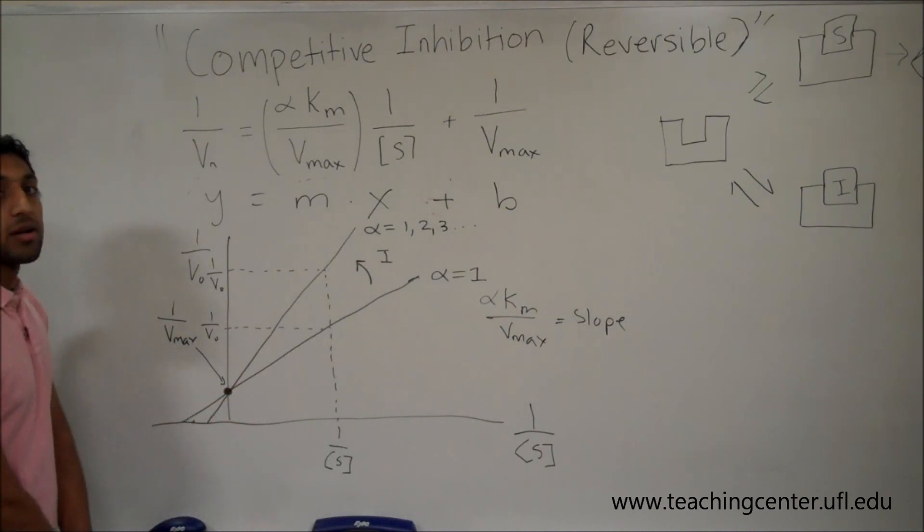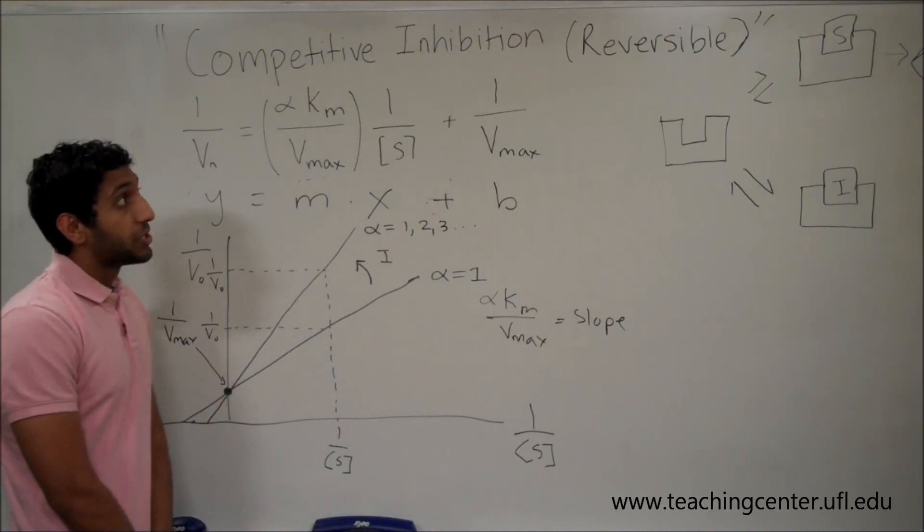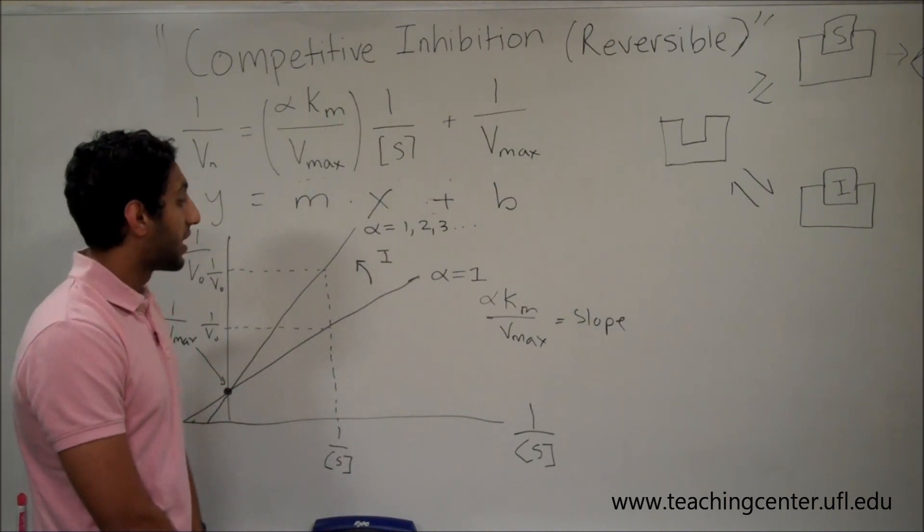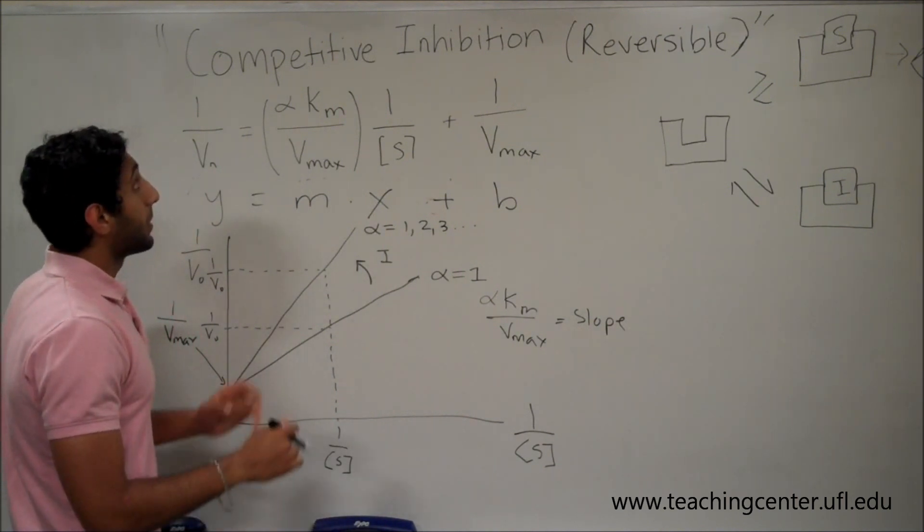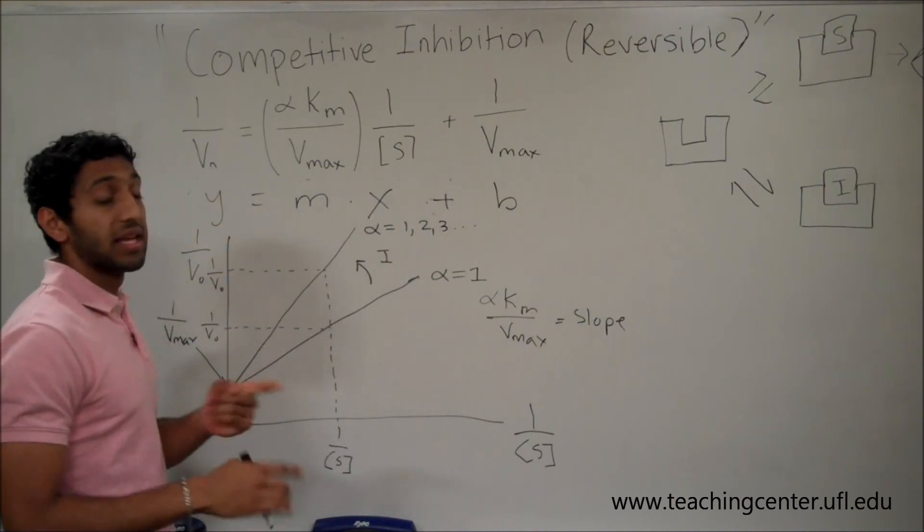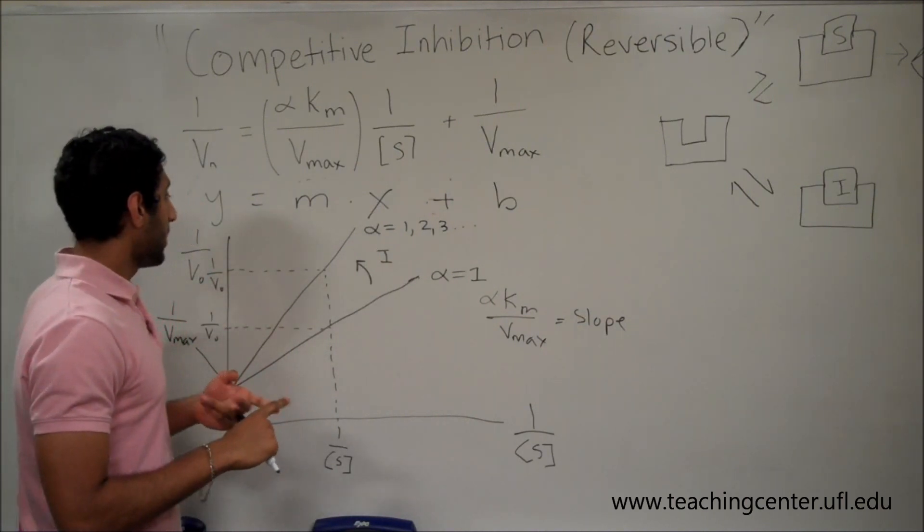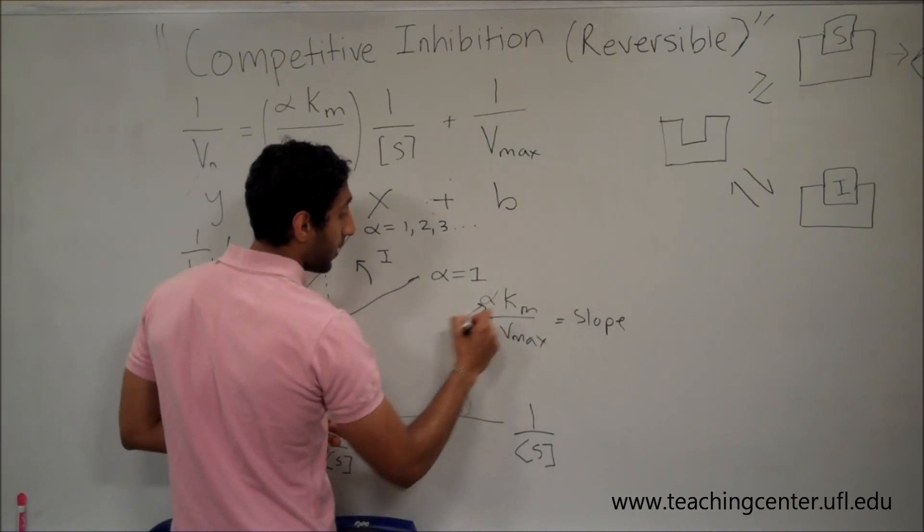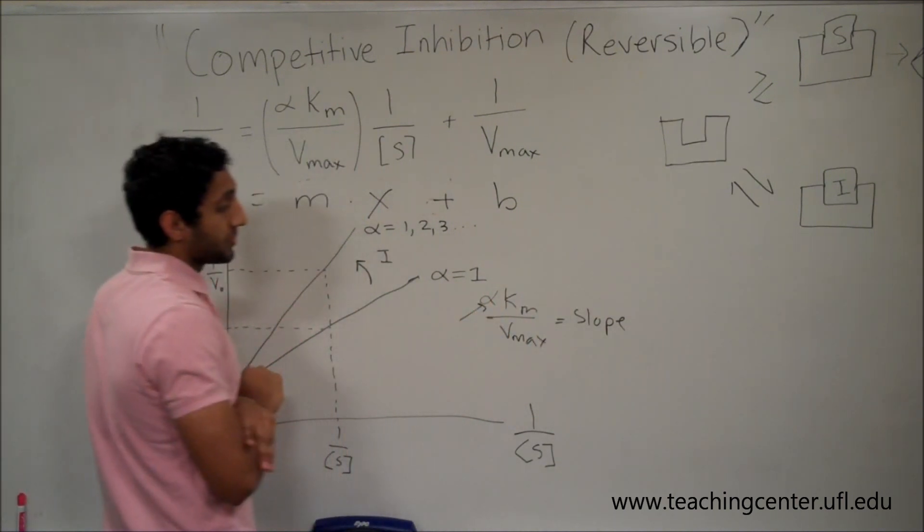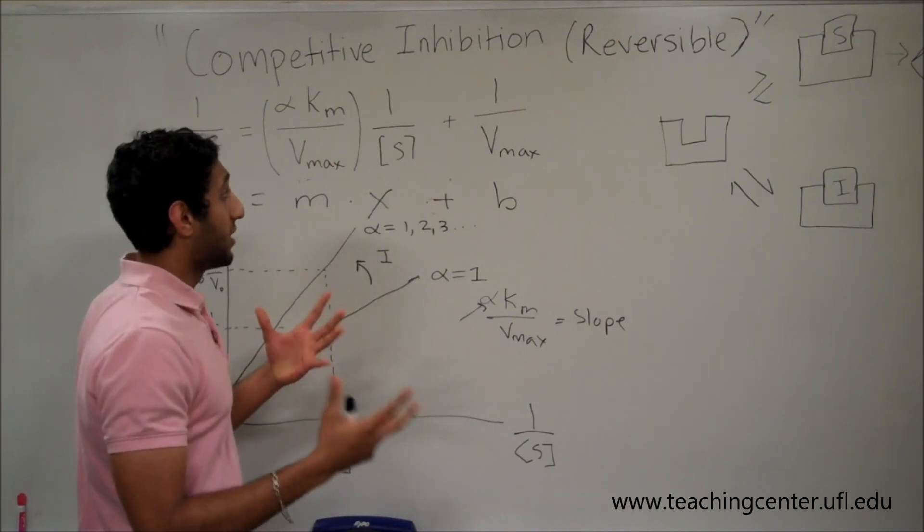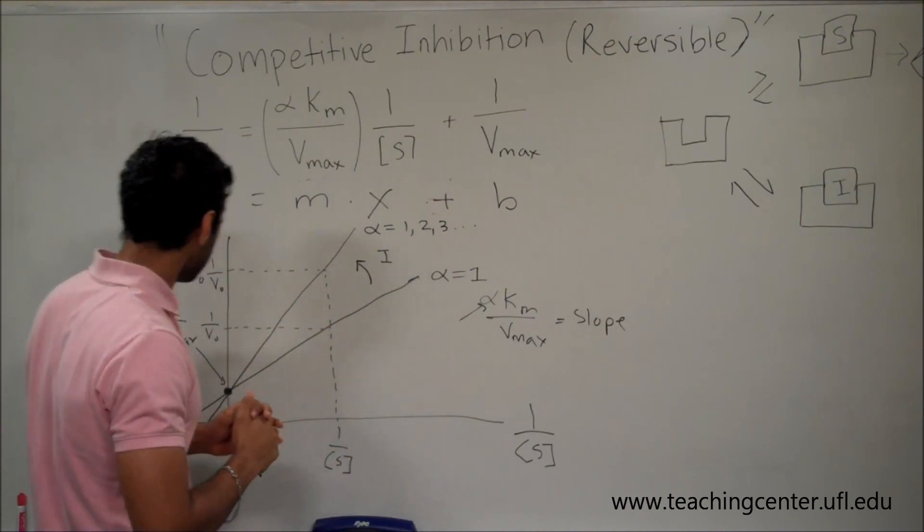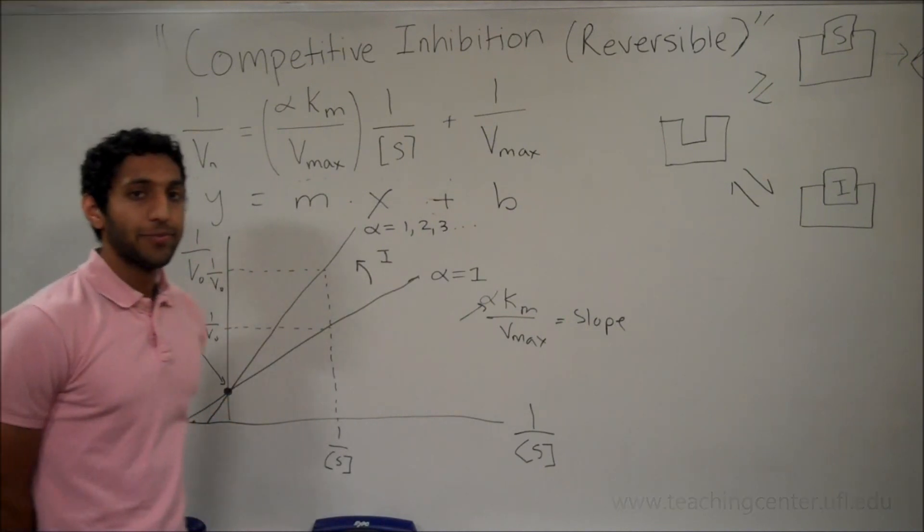Now there are other forms of inhibition that do change it, and we will get to that at a later point. But remember, the highlights of competitive inhibition is that it doesn't change vmax. It modifies the slope through alpha, and alpha represents the intensity to which inhibition is occurring for the enzyme. Thanks, hope that helps.